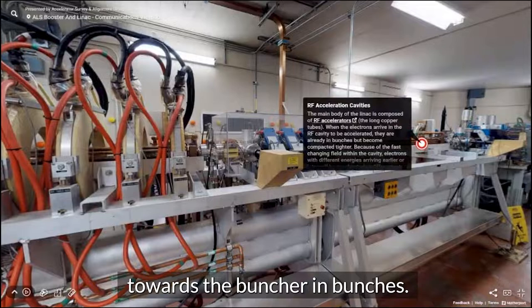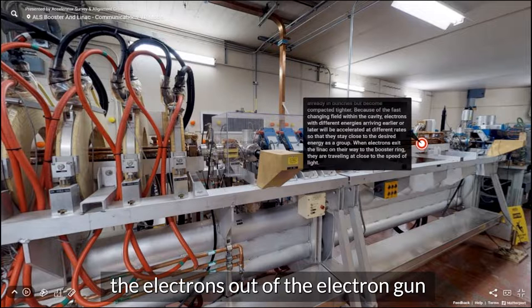The buncher's main job is to accelerate the electrons out of the electron gun by channeling microwave radiation for the electrons to ride on like a surfboard.